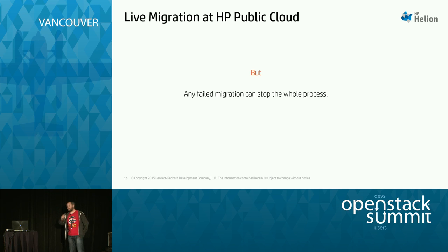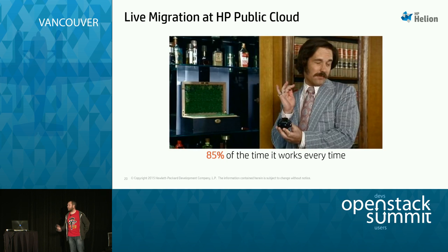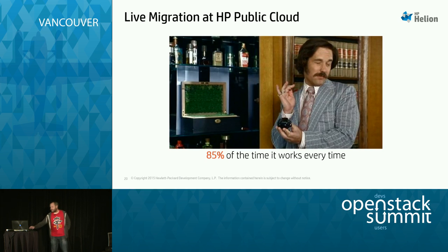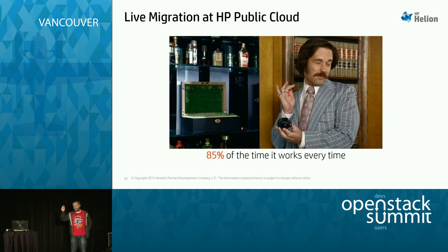What's the success rate for an individual live migration? 85%. I did the math: 85% to the power of five means if you start five migrations at once, you have less than a 50% chance of all of them completing successfully. So the 'write it off and put it in the corner' scenario happens a lot — more than we wanted. 85% is a long way from 100%.